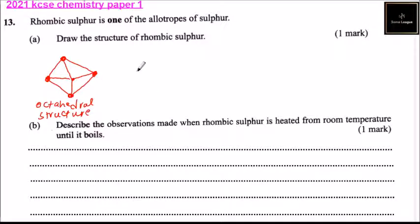Octahedral structure. It can also be drawn like this: we have that one, we have that, then we have another sulfur there, another sulfur there, then we have this one, another one there, then we have that, and we complete it like that. Alternatively, you can draw it like this.